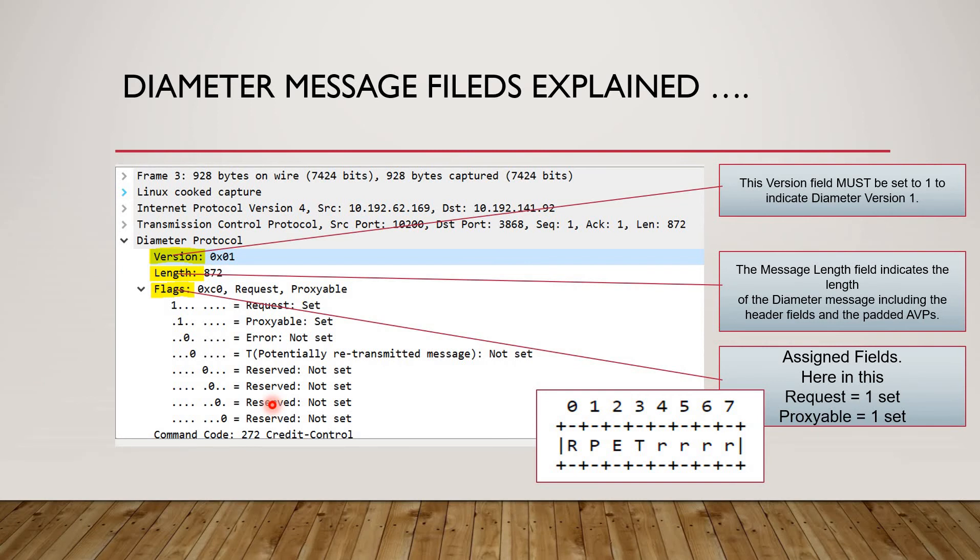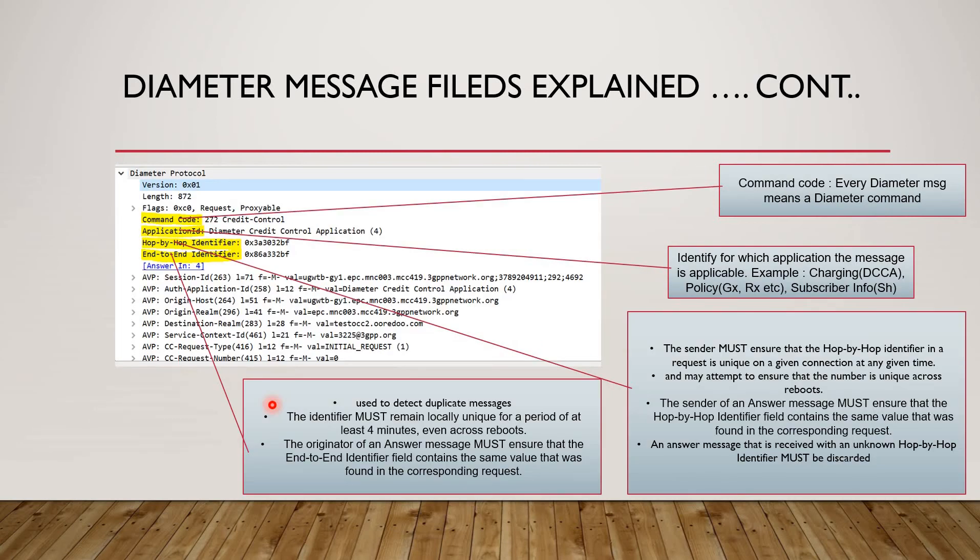This is the header of diameter message. Again will explain you like command code. As I told in the previous slides, there are so many command codes and each application has its own set of command codes. This field shows that what exactly command code it is. So 272 is the command code which is in digits, in normal number system, and the description of it is credit control.